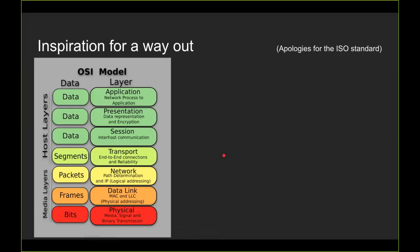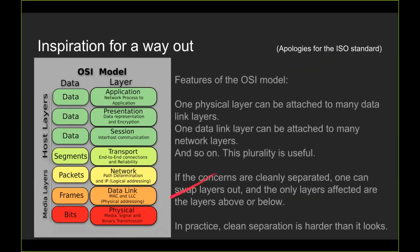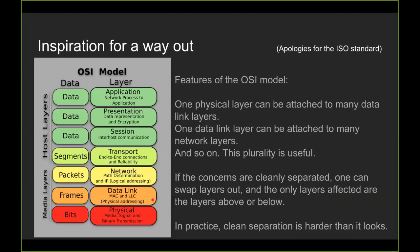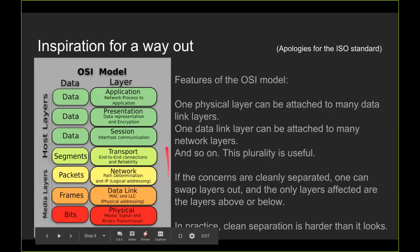Looking at those problems, I was searching for inspiration on how to solve them when building analytic software. I took some inspiration from the OSI model — I apologize that this is an ISO standard at an IEEE meeting. The OSI model has some key features: each layer can connect to the layer above it and the layer below it. There can be many data links for each physical layer, many network layers for a data link layer. So there are levels of abstraction and a lot of plurality that can emerge from a layered approach. If you cleanly separate these layers, swapping out the network layer only affects the transport and data link layers.